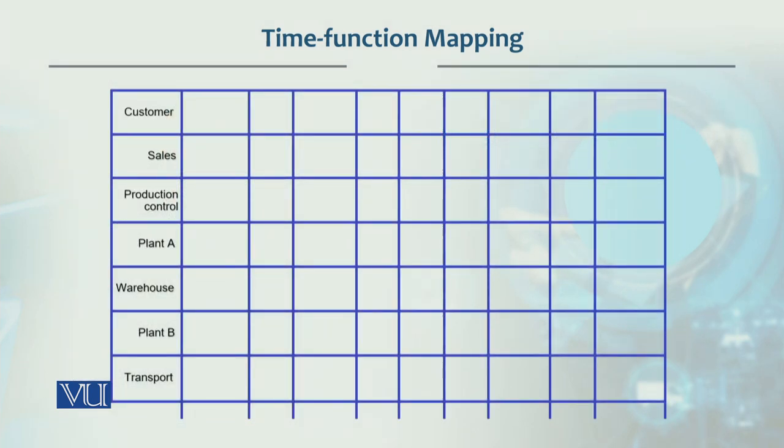For example, if we look at this, this is basically the vertical axis. There are different customers, sales, production control, plant A, warehouse, plant B, transport and so on. And this is our flow diagram, which we show in the yellow color.